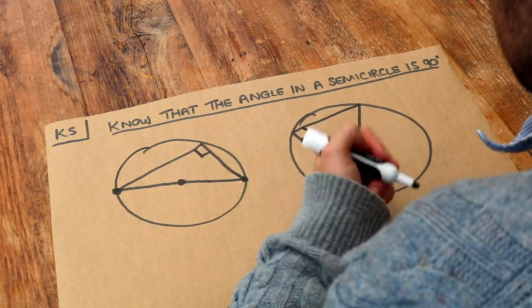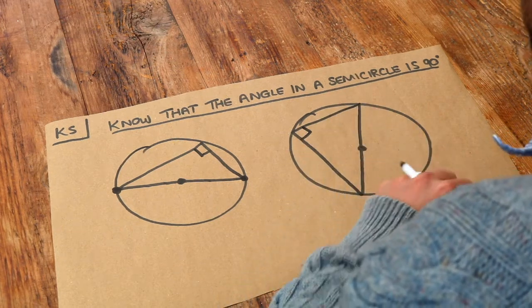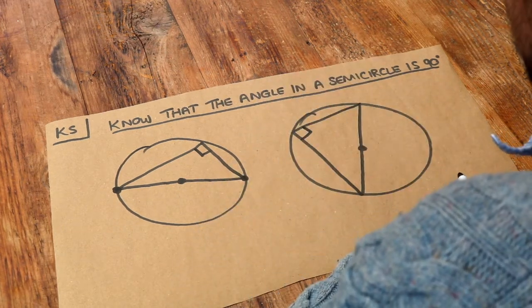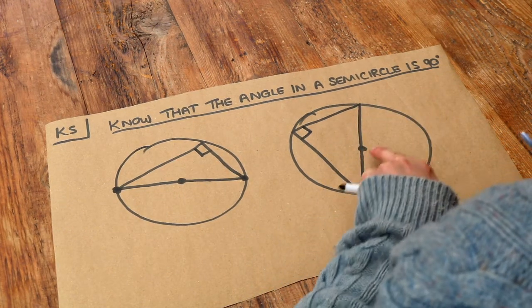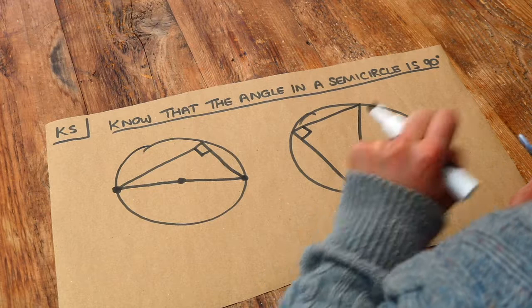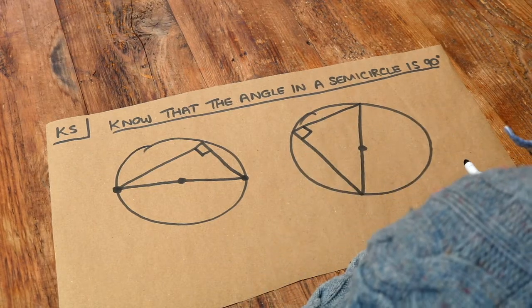Now you won't typically get a circle theorem question on its own. This will typically be used in conjunction with other circle theorems, and in general always look out for when you have a line that goes through the center of the circle because we can typically use this particular circle theorem.